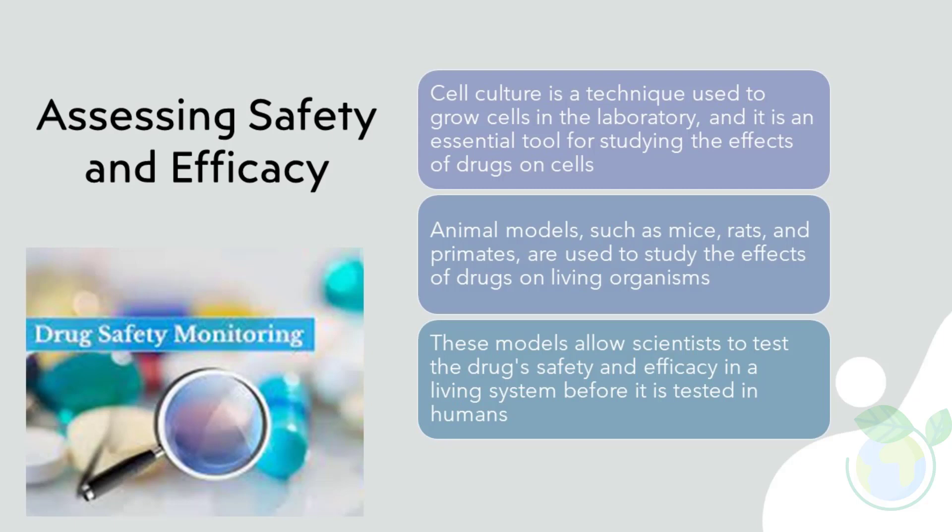Assessing safety and efficacy: Once a potential drug candidate has been identified, it is tested in cell culture and animal models to determine its safety and efficacy. Cell culture is a technique used to grow cells in the laboratory and is an essential tool for studying the effects of drugs on cells. Animal models, such as mice, rats, and primates, are used to study the effects of drugs on living organisms. These models allow scientists to test the drug's safety and efficacy in a living system before it is tested in humans.